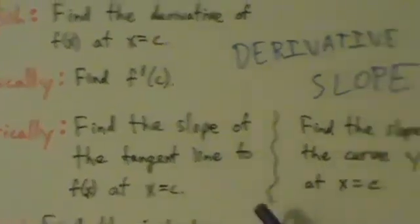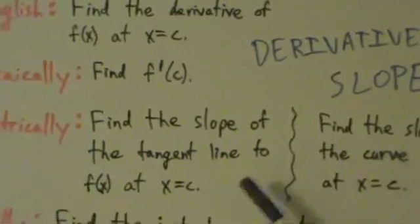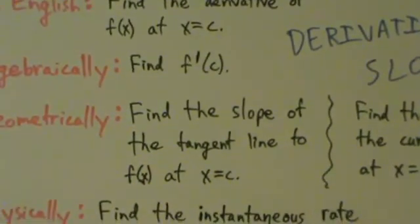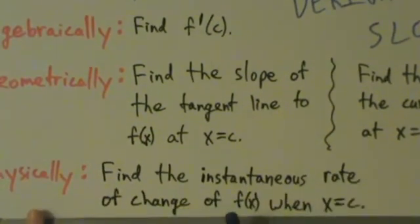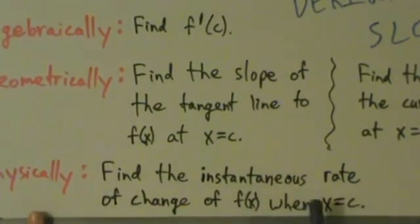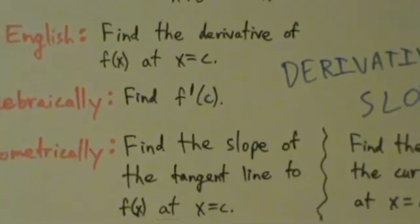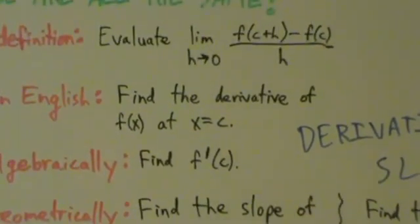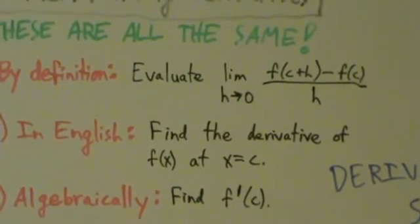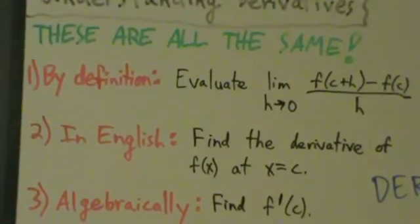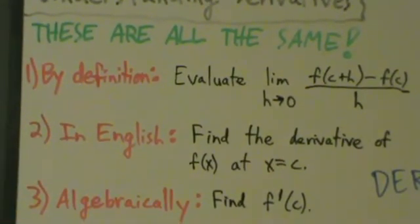Geometrically or graphically, find the slope of the tangent line or find the slope of the curve at x equals c. And then physically, find the instantaneous rate of change of f(x) at x equals c. Remember, we also talked about that connection - the slope of the tangent line is the instantaneous rate of change, and by definition that is the derivative. These are five different ways of saying the exact same thing. That's very important to know. We'll see a bunch of examples in the next few videos.